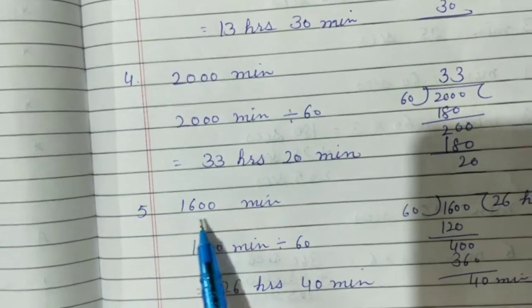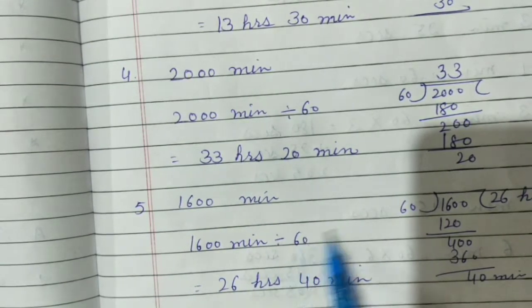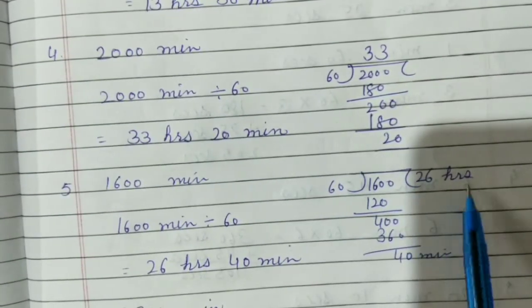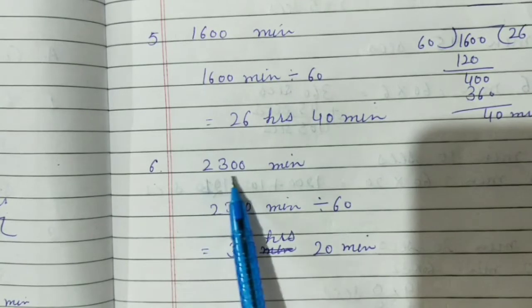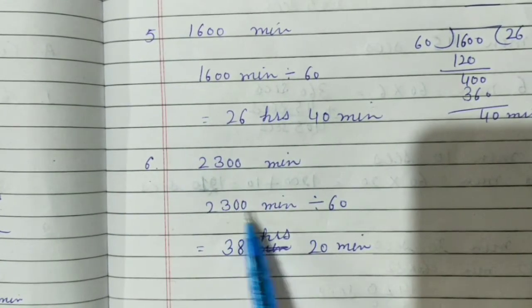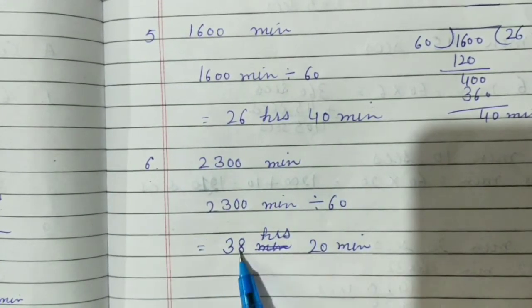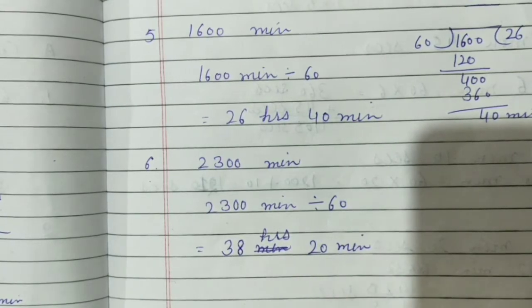Question number 5, 1600 minutes. So divide by 60. Answer is in hours and minutes, 26 hours 40 minutes. Same way, next question. 2300 minutes. Divide 2300 minutes by 60. Answer is 38 hours 20 minutes.